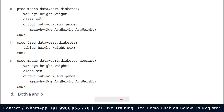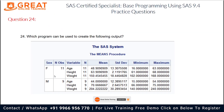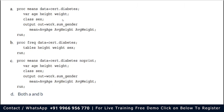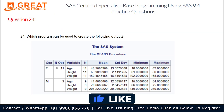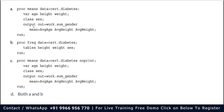Looking at the options, the first option is: PROC MEANS DATA=cert.diabetes VAR age height weight; CLASS sex; OUTPUT OUT=work.sum_gender MEAN=average_age average_height average_weight; RUN; The VAR statement specifies which variables we want to keep — here we have age, height, and weight. The CLASS statement is the grouping variable, dividing by sex: female and male.